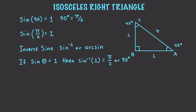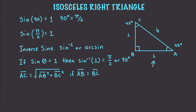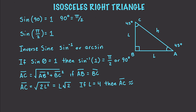When dealing with isosceles right triangles, line segment AC, our hypotenuse, equals the square root of AB squared plus BC squared. In this specific situation, if AB equals BC, we refer to both as L. Then AC equals the square root of 2L squared, which equals L times the square root of 2. For example, if L equals 4, then AC is approximately equal to 5.66.